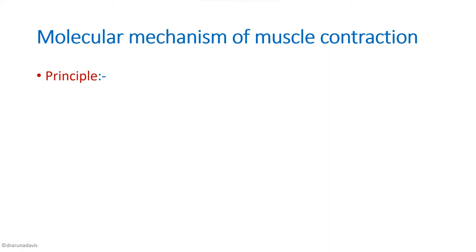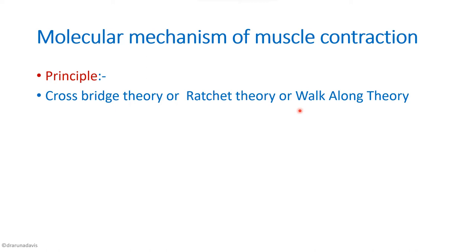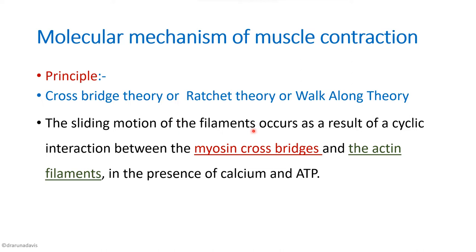We have to write about the principle of muscle contraction, which is the cross-bridge theory, also called the ratchet theory or walk-along theory. According to this theory, the sliding motion of filaments occurs as a result of cyclic interaction between the myosin cross-bridges and actin filaments in the presence of calcium and ATP.